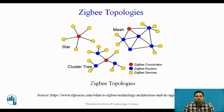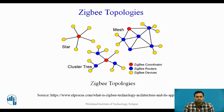Now we will see Zigbee topologies. Three different types of network topologies are used: star topology, mesh topology, and cluster tree. In star topology, there is one Zigbee coordinator and a number of Zigbee devices, all connected directly to that coordinator. This type of star topology is used in industries where all end devices can directly connect to the Zigbee coordinator.